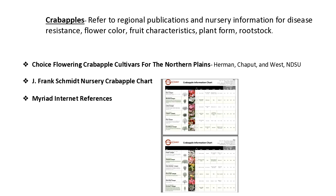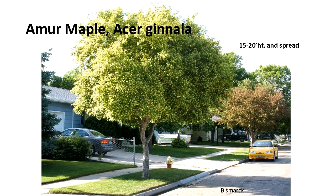If you're really wanting a crab apple in your landscape, I would really recommend researching it first and determining the one you really want for your yard. I'm going to talk a little about Amur maples, because they are probably one of the most adaptable small maples we can grow in the Dakotas.